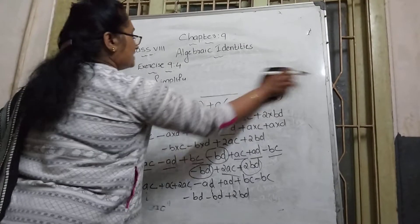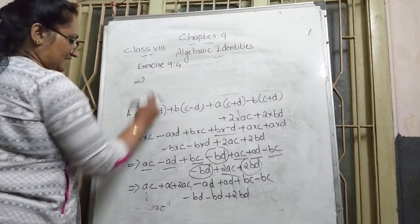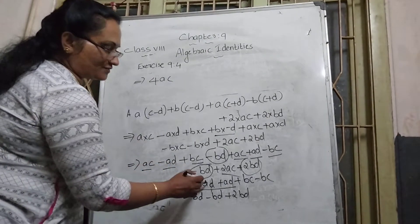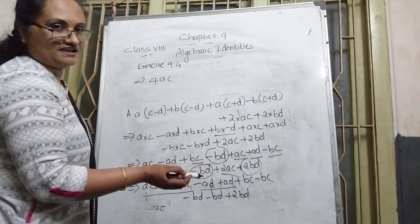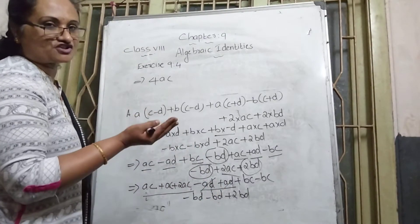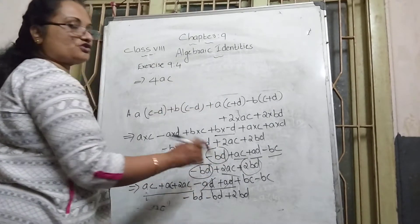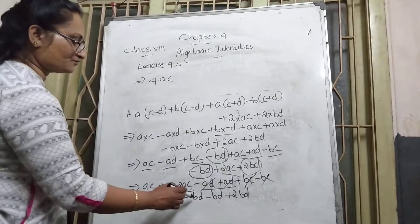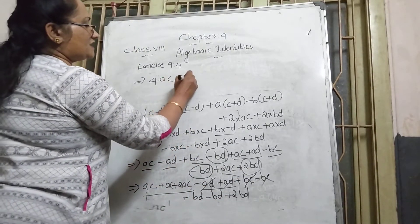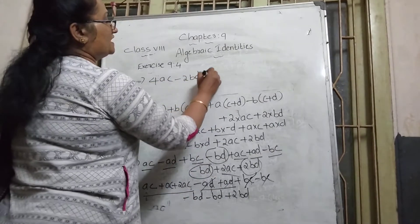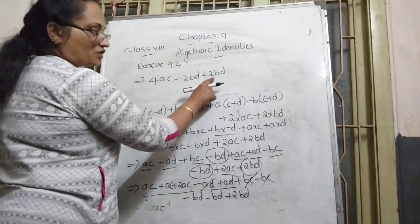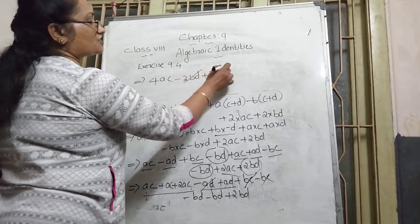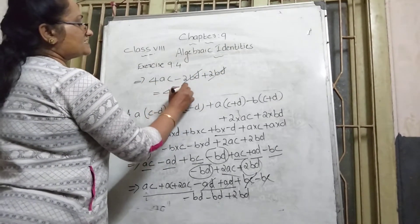The AC terms add to 4AC. The AD terms: −1 + 1 = 0, so they cancel. BC terms: +1 − 1 = 0, they also cancel. BD terms: −2 + 2 = 0, they cancel too. So the final answer is 4AC.